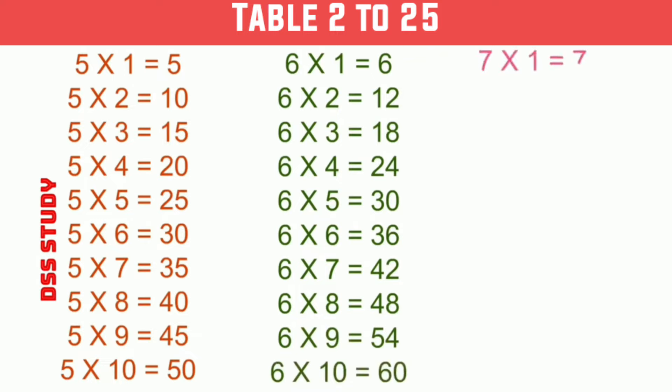7×1 is 7, 7×2 is 14, 7×3 is 21, 7×4 is 28, 7×5 is 35.